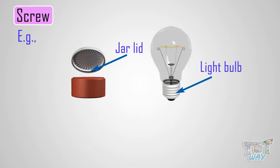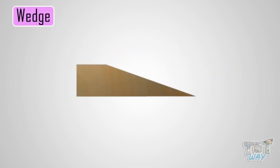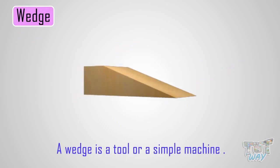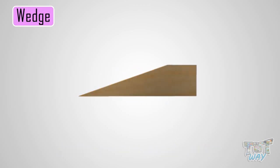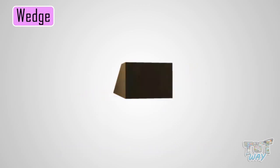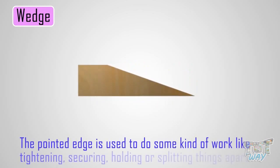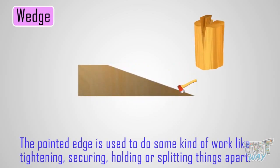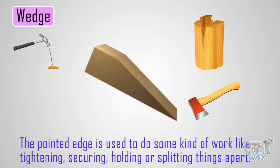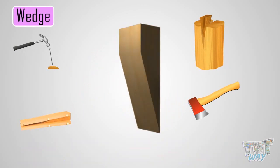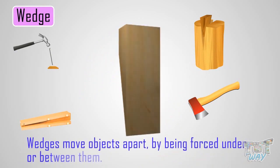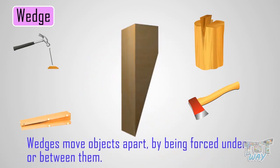Now let's learn another simple machine, which is a wedge. A wedge is a tool or simple machine that consists of two inclined planes inclined at some angle, making a pointed edge. The pointed edge is used to do some kind of work, like tightening, securing, holding, or splitting things apart. Wedges move objects apart by being forced under or between them.